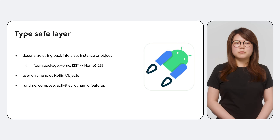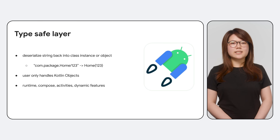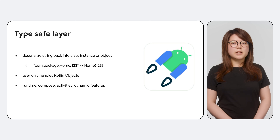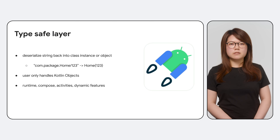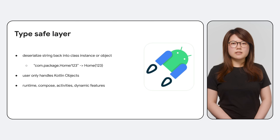For this new feature, we added type-safe overloads for existing navigation APIs that take in string routes. This applies across the main navigation modules, including runtime, compose, activities, and dynamic features. Now, let's take a closer look at the main type-safety APIs for navigation compose.